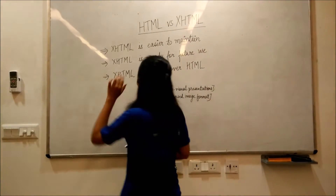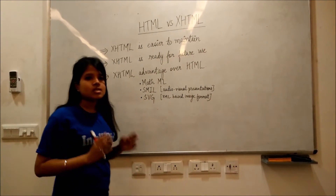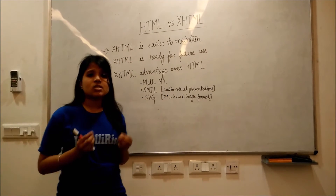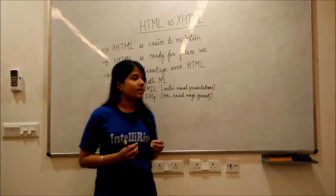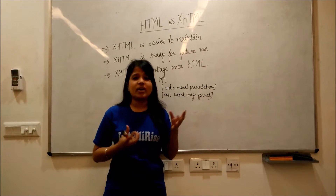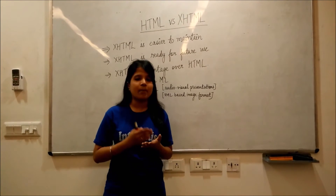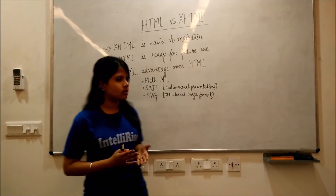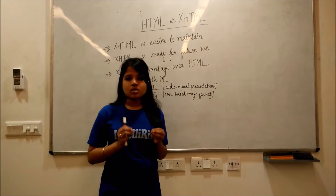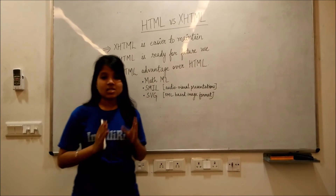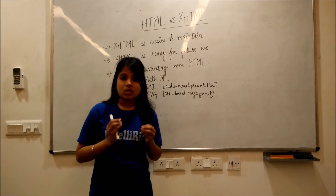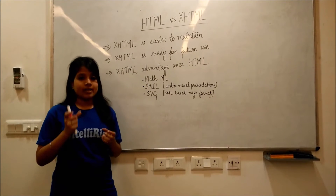First, XHTML is easier to maintain. The reason is that its structure is so accurate — it follows a stricter syntax and is quite a stricter language compared to HTML. There are certain things a user must take care of in XHTML: all elements and attributes should be in small letters.